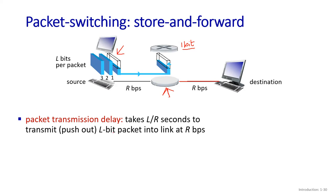A packet transmission delay: it takes L/R seconds to transmit an L-bit packet into a link at transmission rate R. So the delay from source to router is L/R, and from router to destination is another L/R, making the complete end-to-end delay 2L/R.